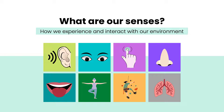We have eight senses in total, however only five are more commonly spoken about. We see through our eyes — our visual system. We smell through our nose — our olfactory system. We listen through our ears — our auditory system. We taste with our tongue — our gustatory system. We recognize touch from our skin — our tactile system. All affect how we interact and explore our environment.